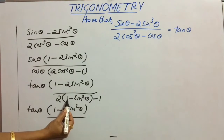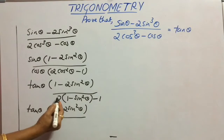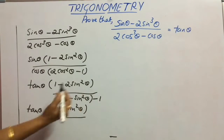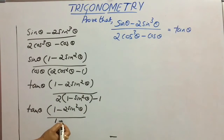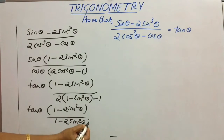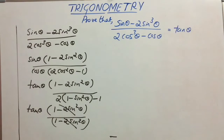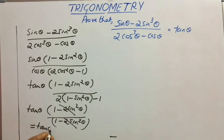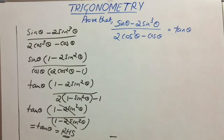Now if we multiply: 2 ones are 2, and minus 1, so 2 - 1 = 1, minus 2sin²θ. The (1 - 2sin²θ) terms cancel, and the remaining answer is tan θ, which equals RHS — the needed result.